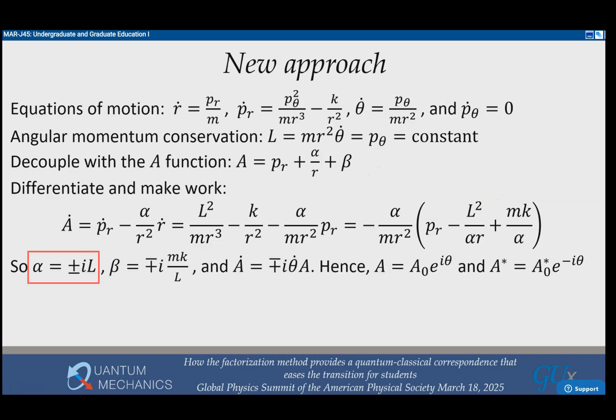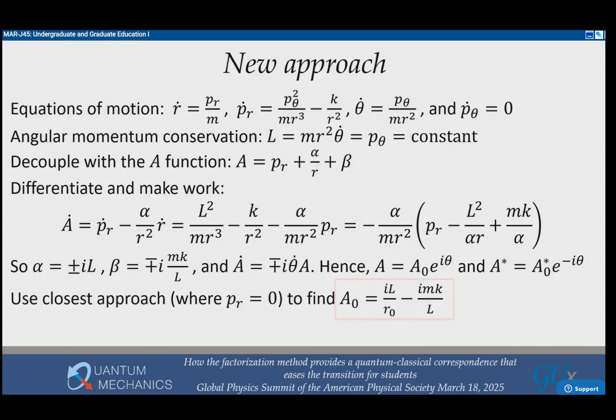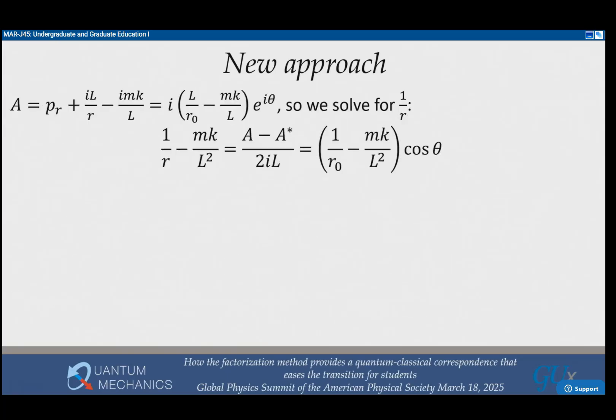We can again solve for that. What we find is alpha is again pure imaginary, plus or minus il. Beta is also pure imaginary. A dot is minus plus i theta dot a, and that's an exact differential equation that can be solved. You find a is A zero e to the i theta. You can think of that as theta of t or the angle in the orbit. We set the constant A zero by the distance of closest approach where the radial momentum is zero.